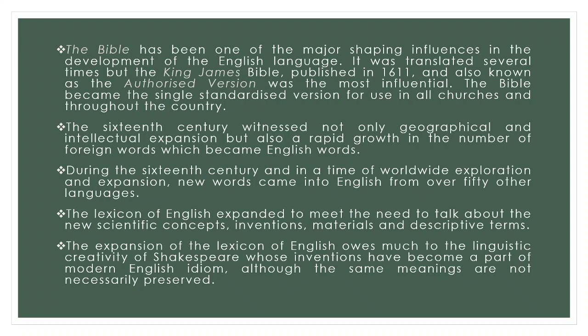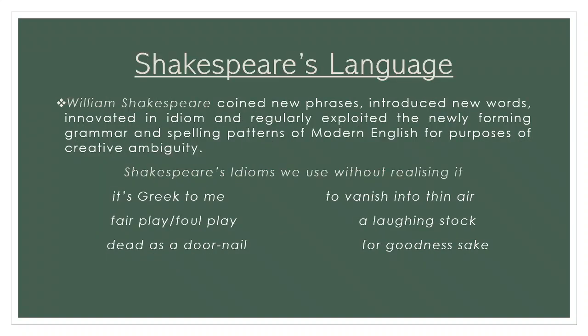The expansion of the lexicon of English owes much to the linguistic creativity of Shakespeare, whose inventions have become part of modern English idiom. At the time of Shakespeare, the English language was in a state of rapid transition. The fluidity of the language was utilized by Shakespeare to coin new phrases, introduce new words, innovate in idiom, and explore the newly forming grammar and spelling patterns of modern English for creative purposes. Shakespeare's more distinctive uses of language are deeply patterned in the ideas and themes of his prose and poetry. Key recurring words such as 'time' in Macbeth, 'honest' in Othello, or 'act' in Hamlet resonate across a whole play.